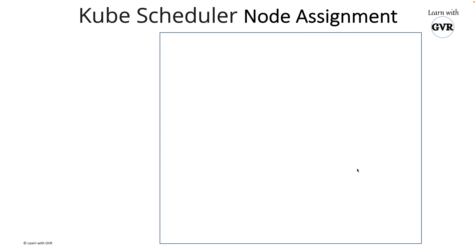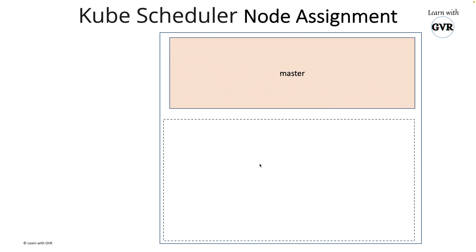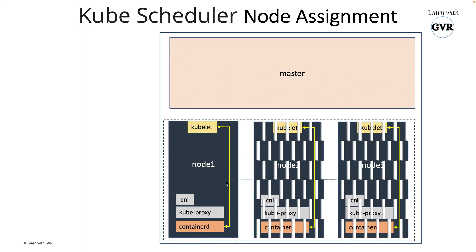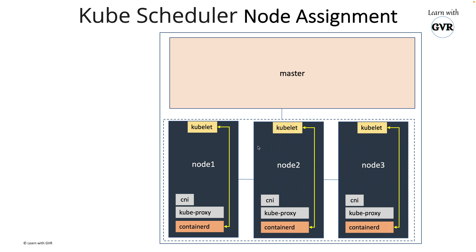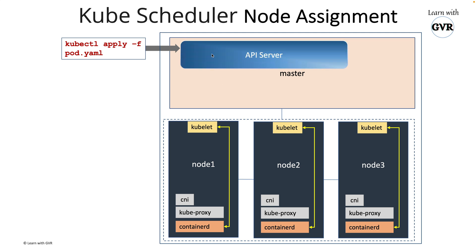A Kubernetes cluster has one master node and a group of worker nodes — for example, a three-node cluster. Every worker node has kubelet, CNI (Container Network Interface), kube-proxy, and containerd installed. Kubelet communicates with containerd to create a pod. When we create a pod, it hits the kube-apiserver on the master node.